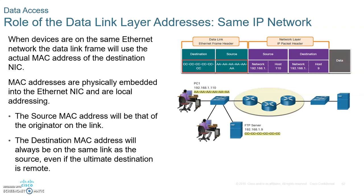Let's look at the data link addresses. The source data link address, which is a layer two MAC address, you get from your NIC. This address is attached to the frame as the source MAC address. The destination data link MAC address is obtained by the source sending an ARP request.